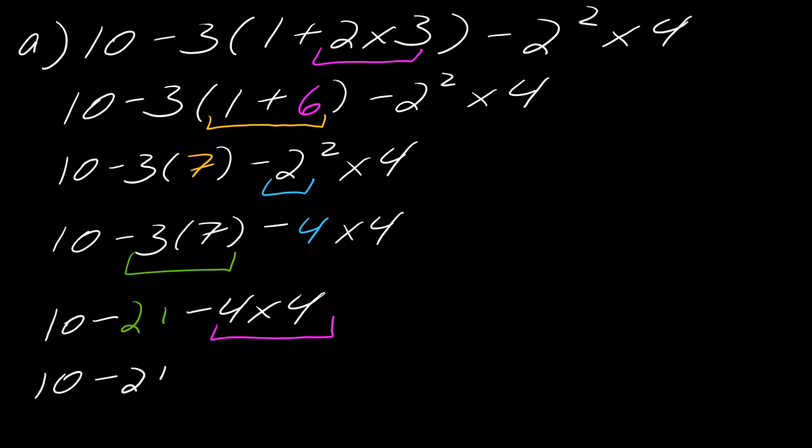So this is 10 minus 21 minus 16, and so now we can just continue to work through this. So 10 minus 21, that's negative 11, and then negative 11 minus 16, this is negative 17.